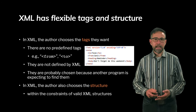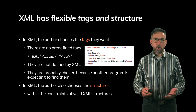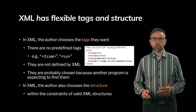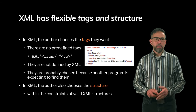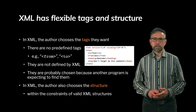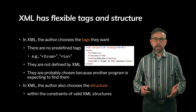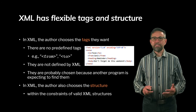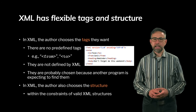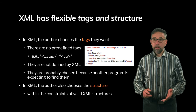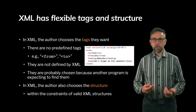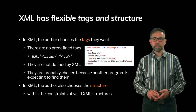You can extend this language with any tags you'd like. In XML, the author gets to choose the tags they want — words like 'note,' 'to,' or 'from.' There aren't any predefined tags in well-formed XML. From and to are not defined anywhere; no one is telling the author to use those. They've just decided they want to use them — they're not defined by an XML standard. But there's probably a reason why the author is using those, possibly because it communicates something about the data stored in the file.